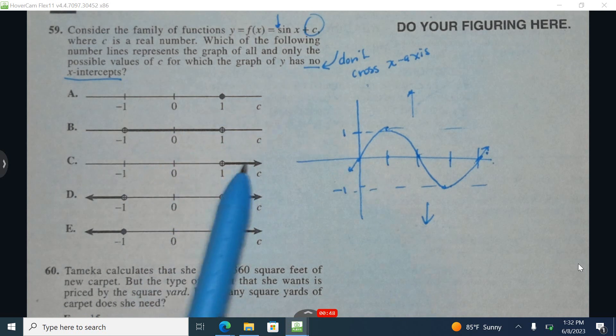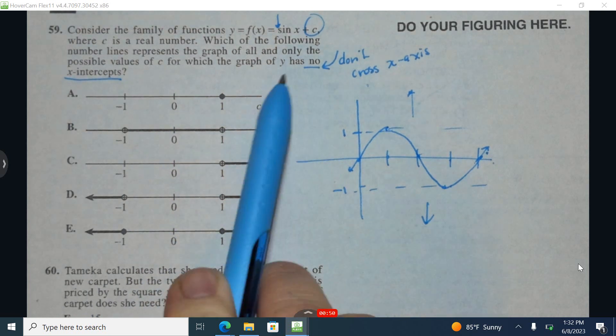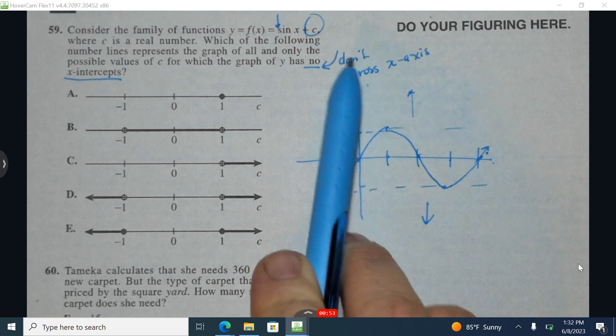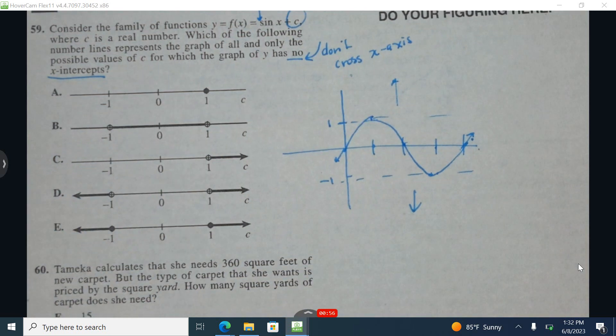Each one of these represents what could c be in order to ensure that this graph does not cross the x-axis.